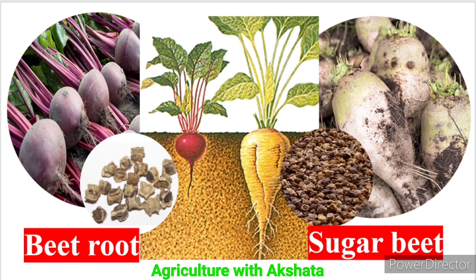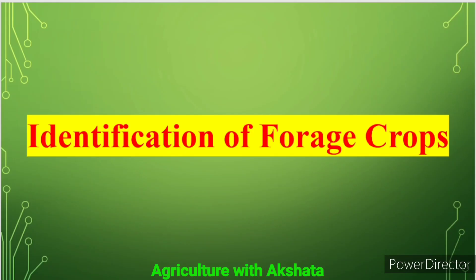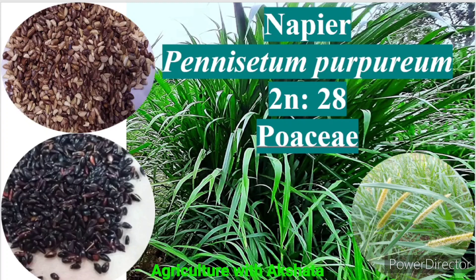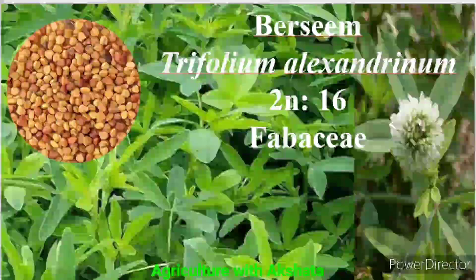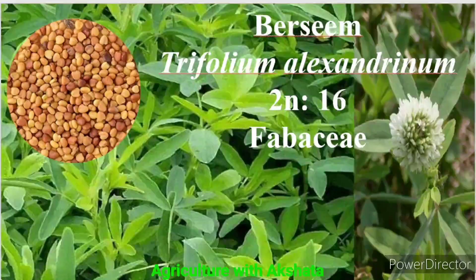You can see how exactly the beetroot and sugar beet look like. Now let us see some fodder crops. Napier grass: Pennisetum purpureum, 2n = 28, Poaceae family. Alfalfa also called Lucerne: Medicago sativa, 2n = 32, Fabaceae family. Berseem: Trifolium alexandrinum, 2n = 16, Fabaceae family.